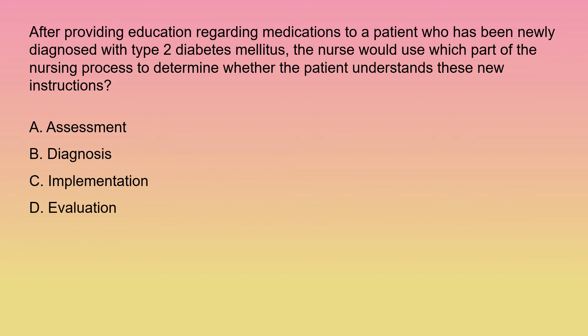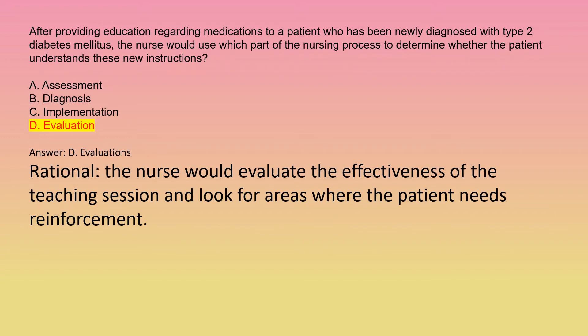After providing education regarding medications to a patient newly diagnosed with type 2 diabetes mellitus, the nurse would use which part of the nursing process to determine whether the patient understands these new instructions? A: assessment. B: diagnosis. C: implementation. D: evaluation. Answer: D, evaluation. Rationale: The nurse would evaluate the effectiveness of the teaching session and look for areas where the patient needs reinforcement.